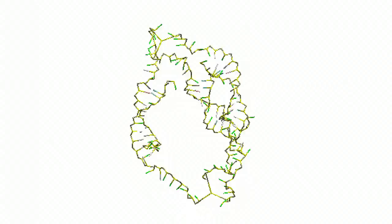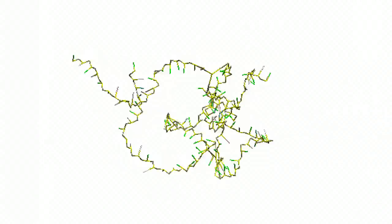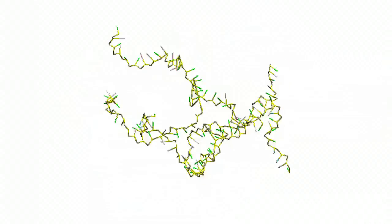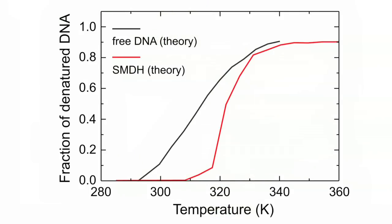Counter-ion release also sharpens the melting transition. The molecular dynamics studies of DNA melting for this dimer structure are based on a coarse-grained model of DNA visualized in the molecular dynamics movie. The resulting melting curves show that the sharpening of the melting behavior in going from free DNA to the SMDH dimer is apparent. We have used a quasi-harmonic analysis to calculate the entropy changes associated with melting of the first, second, and third DNAs.